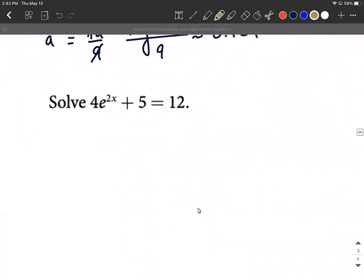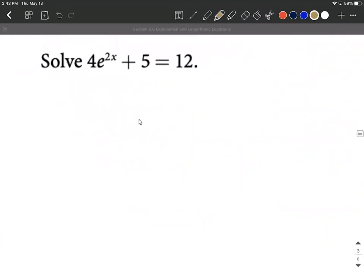A couple more of these real quickly. This one has a little bit more going on, but we want to solve this equation. 4 multiplied by e raised to the 2x plus 5 equals 12. Remember, our first goal is isolate the e raised to the power. So we want to get rid of the 4 and the 5. We should definitely get rid of the 5 first by subtracting it to the other side.